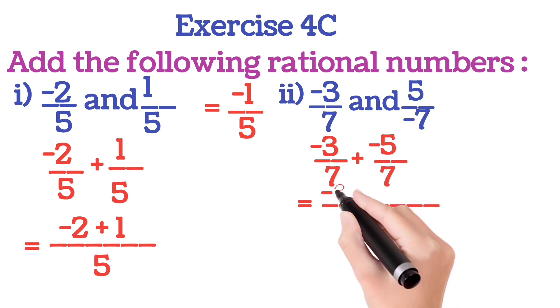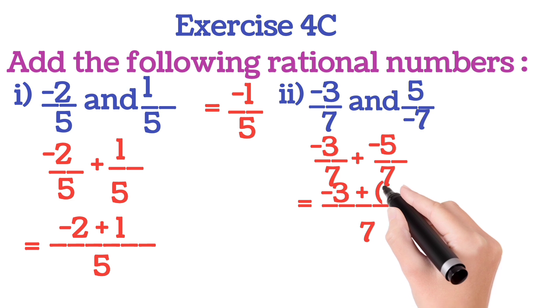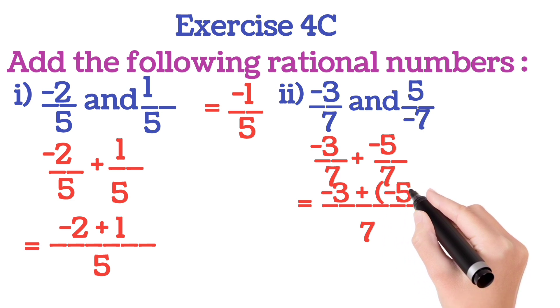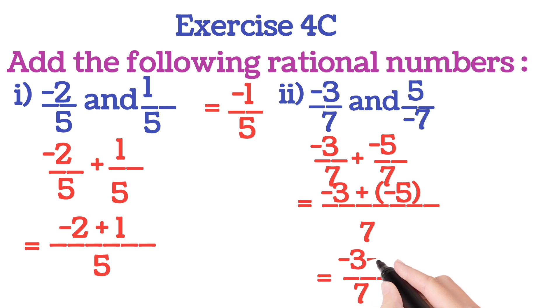Now you write 7. Now minus 3 plus minus 5, keep inside the bracket. Next step equals to 7 you write here and then minus 7 plus minus minus 5. Both are negative, so you will do plus and minus sign is with bigger number. So in our answer minus sign will come. So our answer is minus 8 by 7.